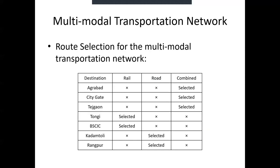The route selection for the multimodal network is shown in this table. Combined transport is used for three different destinations: Agrabah, City Gate, and Tejgao. Rail is used for two different destinations: Tongi and BSCIC. And road is used for two different destinations: Kodumtoli and Rampur.